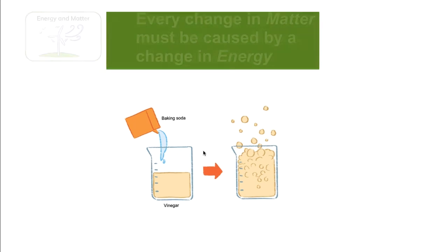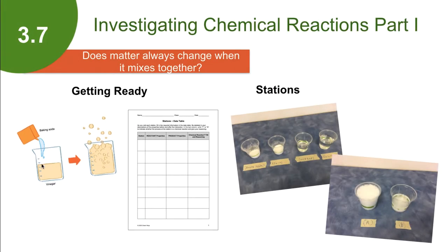In lesson 3.7, students begin by summarizing the ingredients to photosynthesis and how they change. But does matter always change when it mixes together? We use students' prior knowledge of mixing materials to introduce the phenomenon: when we mix different substances together, we get different results.